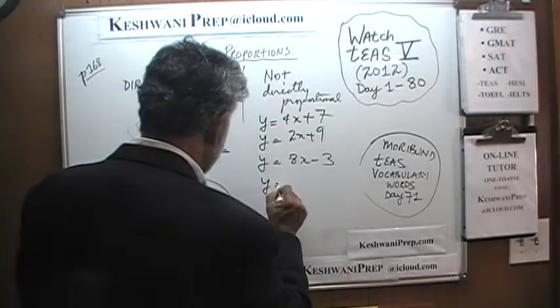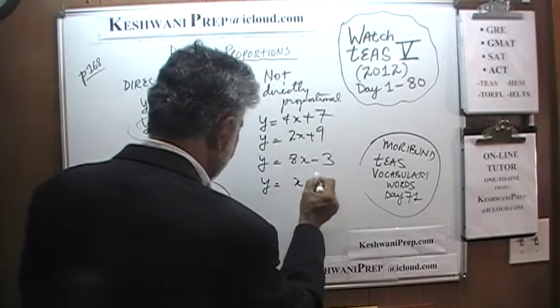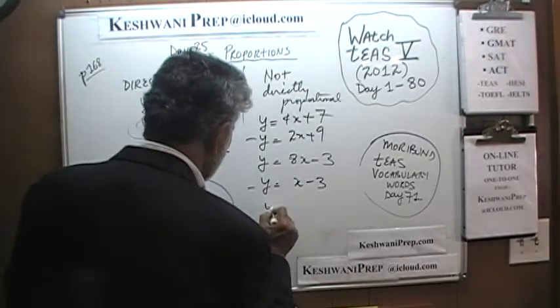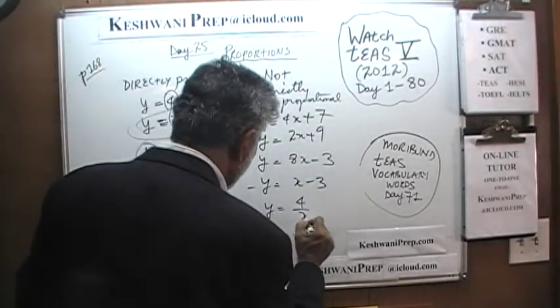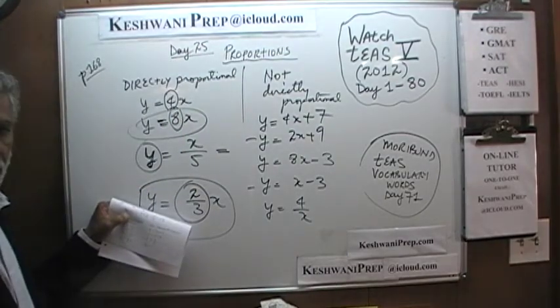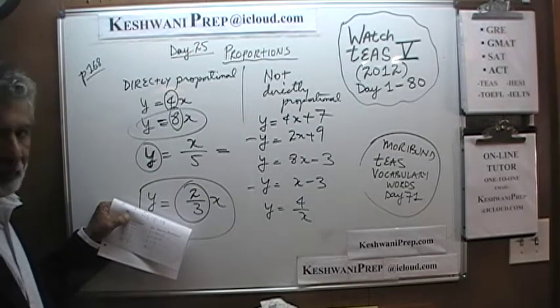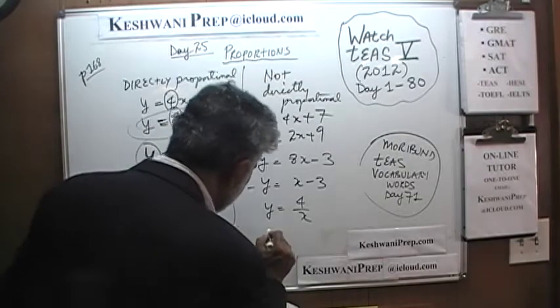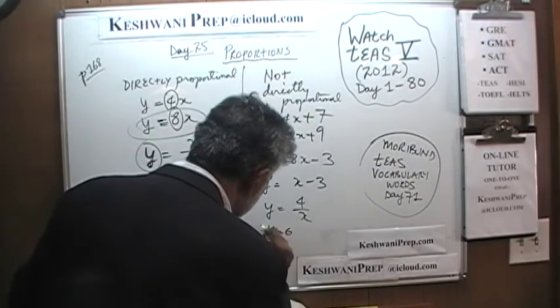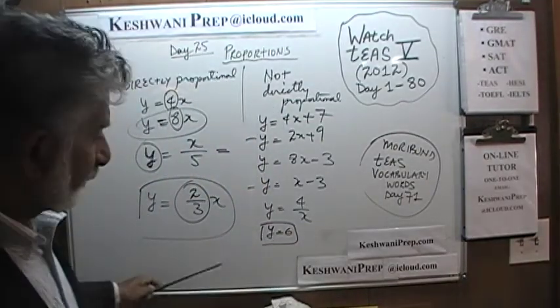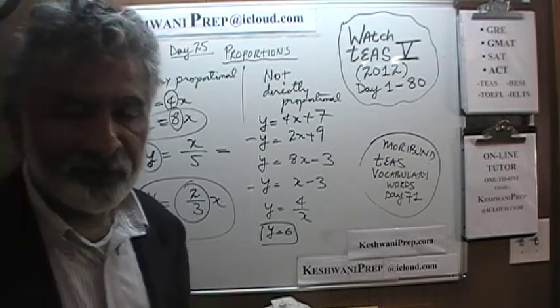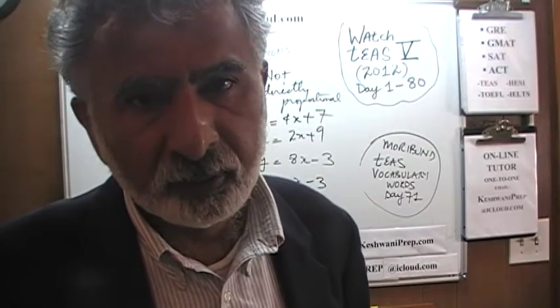More examples from the book: Y equals X minus 3 is not directly proportional. Y equals 4 over X is also not directly proportional, because Y is not a simple multiple of X. And Y equals 6 is not a direct proportionality either, because X doesn't even appear — Y is always fixed at 6 regardless of the value of X.